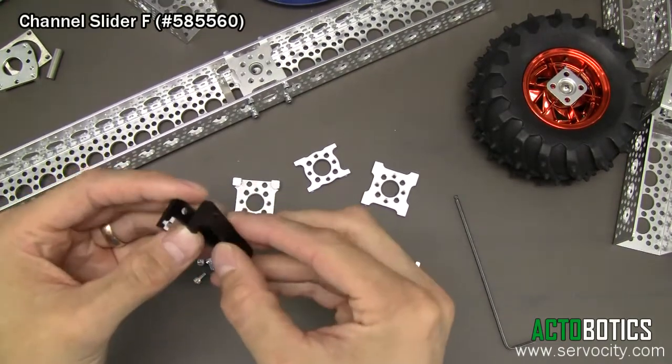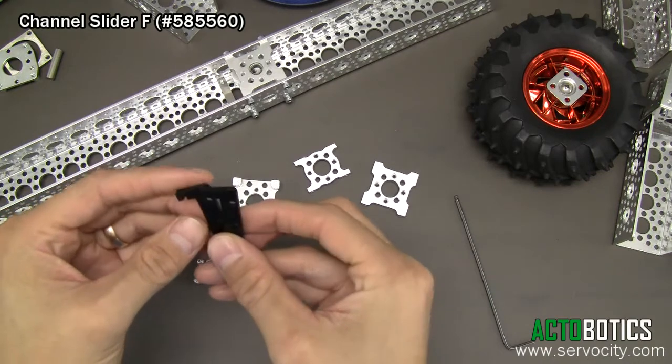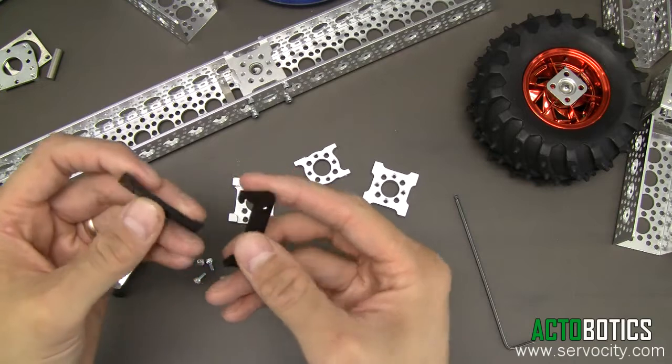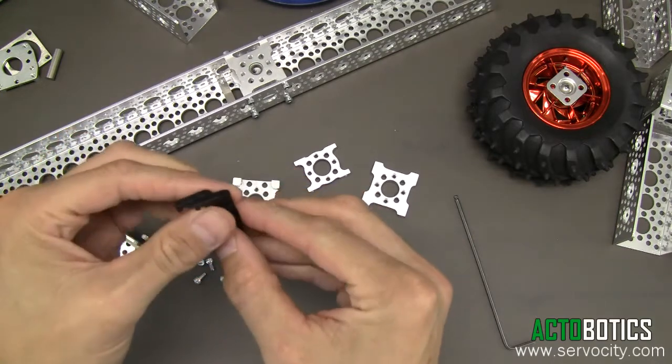We call these Channel Slider F, also part number 585-560. These are little plastic pieces sold in pairs.